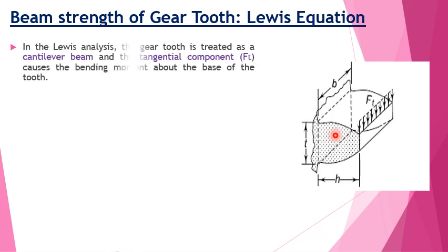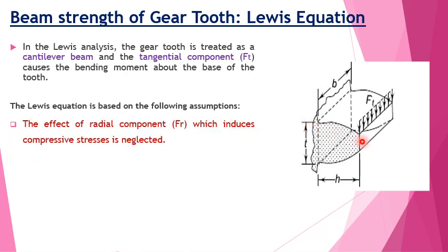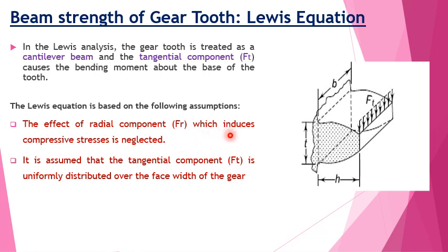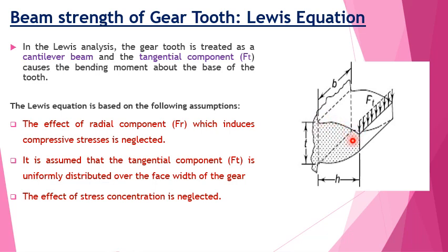There are certain assumptions to be made before we apply the equation. First, the effect of the radial component Fr, which induces compressive stresses in the tooth, is neglected because its magnitude is relatively small. Second, it is assumed that the tangential force Ft is uniformly distributed over the face width of the gear tooth. Third, the effect of stress concentration is neglected, even though the tooth is curved in shape.